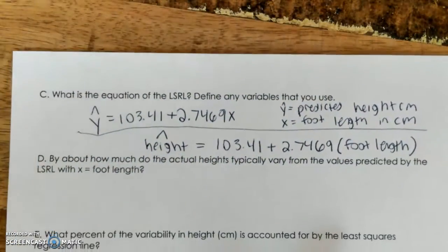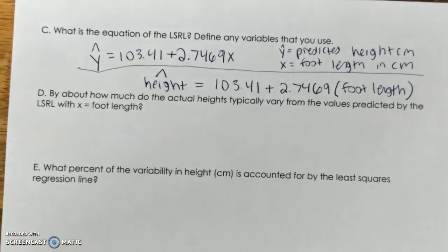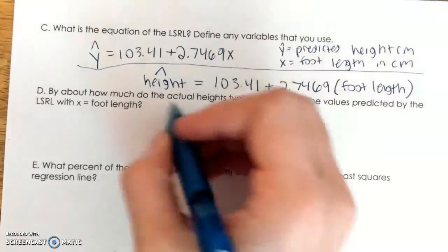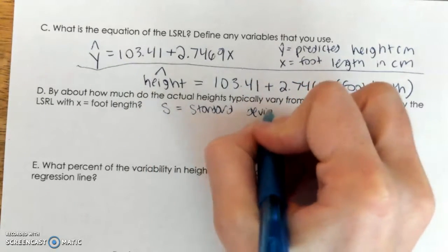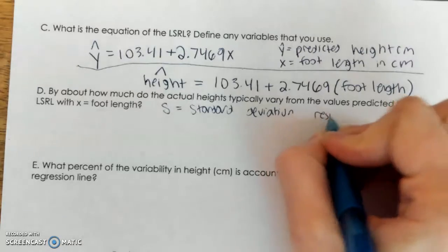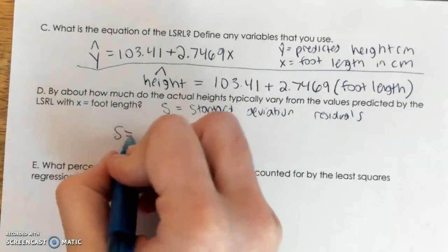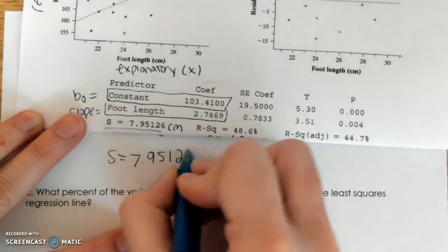Part D: By about how much do actual heights typically vary from values predicted by the model, where x equals foot length? This is basically our sentence stem for S — our standard deviation of residuals. All this is asking is: what is our S? What's our typical prediction error? Looking back at the Minitab output, our S is equal to 7.95126 centimeters.